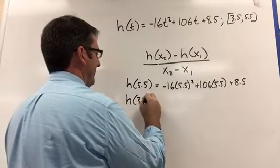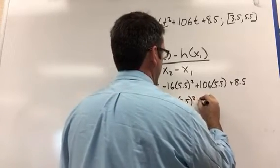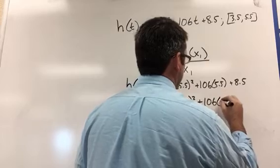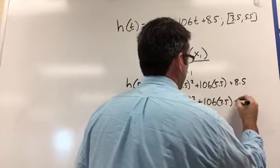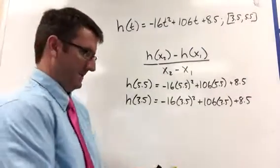And then we're going to want to know h(3.5), so negative 16 times 3.5 squared plus 106 times 3.5 plus 8.5. Let's plug that into the calculator.